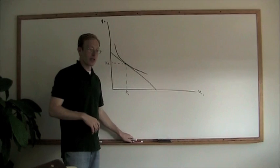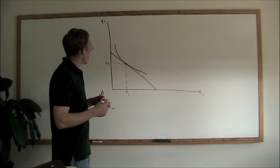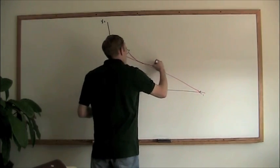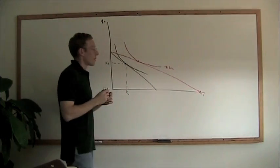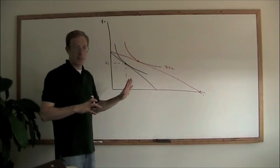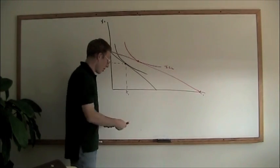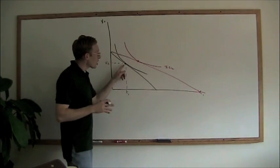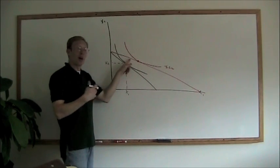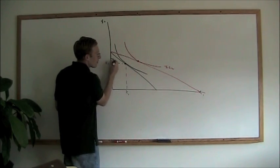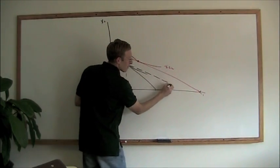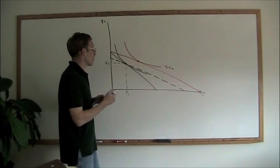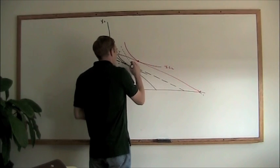Now we get this shift out as a result of the change in price, and we have our new budget constraint and our new indifference curve. The Slutsky approach says we're going to draw a new budget constraint in there — you could consider it a phantom budget constraint, a budget constraint that doesn't really exist. It's going to be parallel to the new budget constraint, but it's going to go through our initial optimality point. This dashed black line is our phantom budget constraint. And if we draw in a phantom indifference curve tangent to that phantom budget constraint, we get something that looks kind of like this.